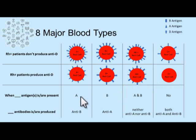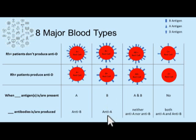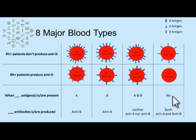When A antigen is present, you would expect anti-B antibodies in the patient's plasma. When B antigens are present, these patients would naturally produce anti-A antibodies. When A and B antigens are present, these individuals should produce neither anti-A nor anti-B antibodies in their plasma. And when neither A nor B antigen are present, both A and B antibodies should be produced in the patient's plasma.